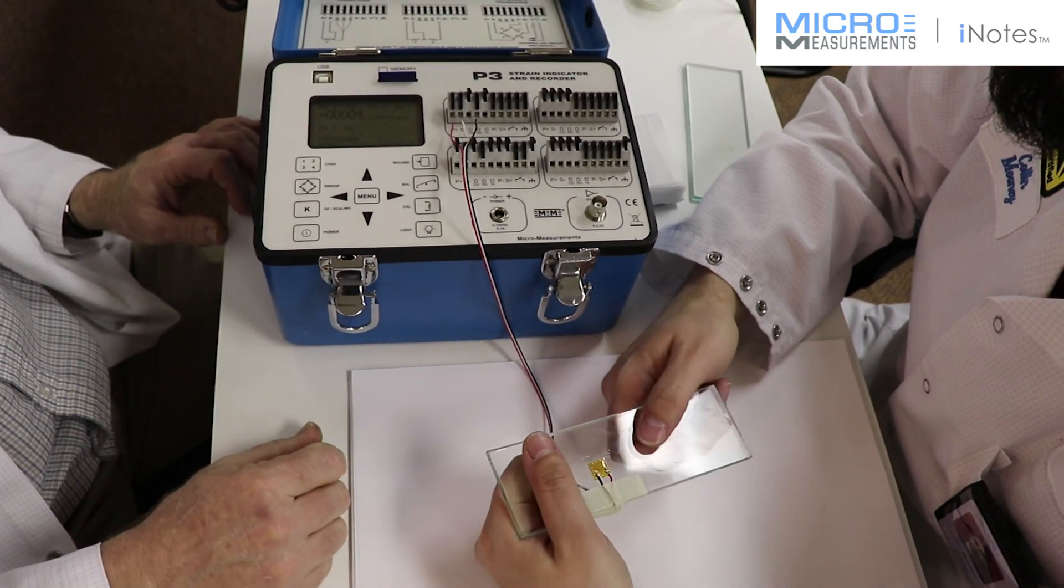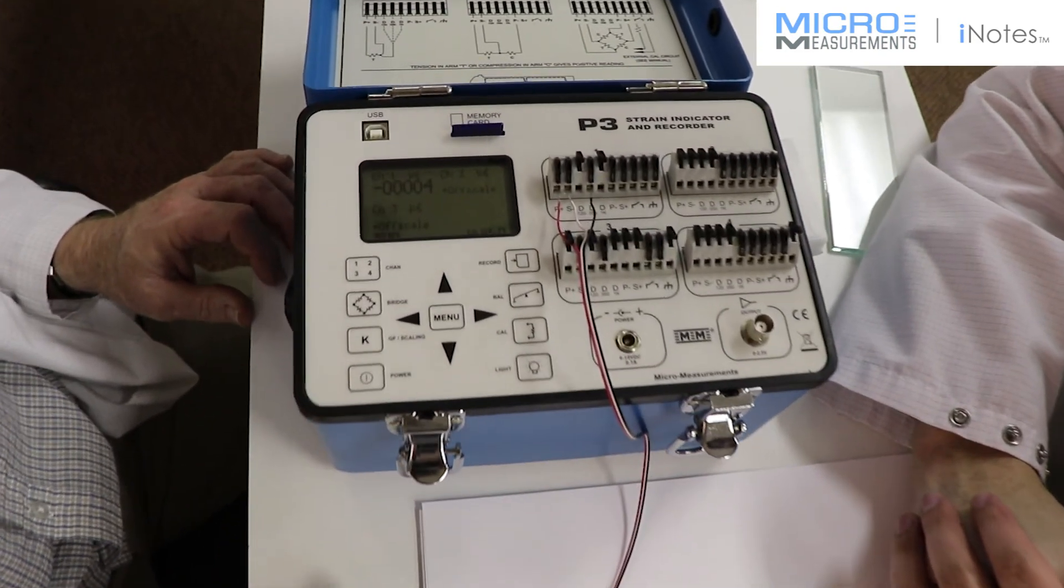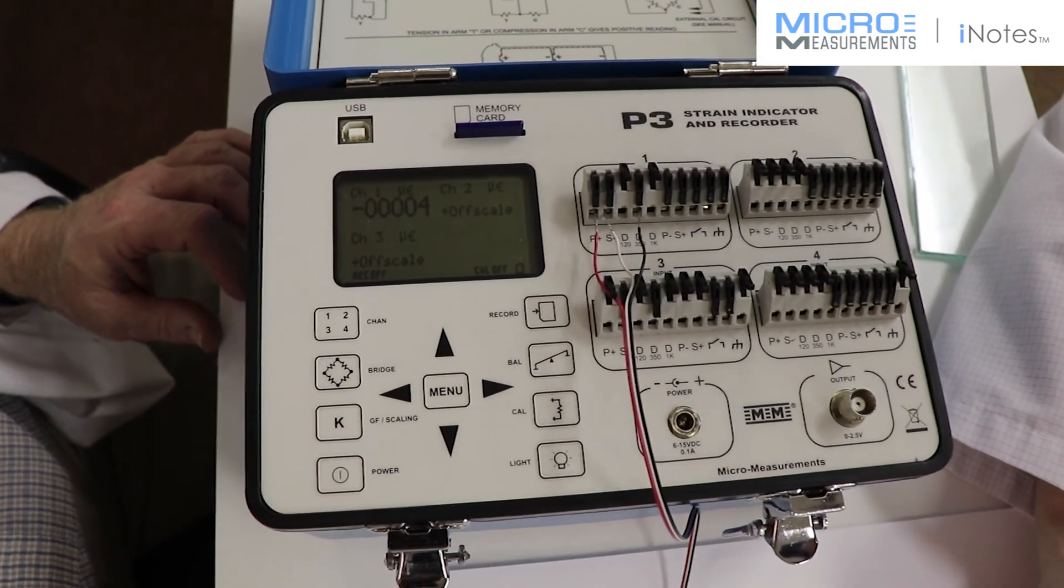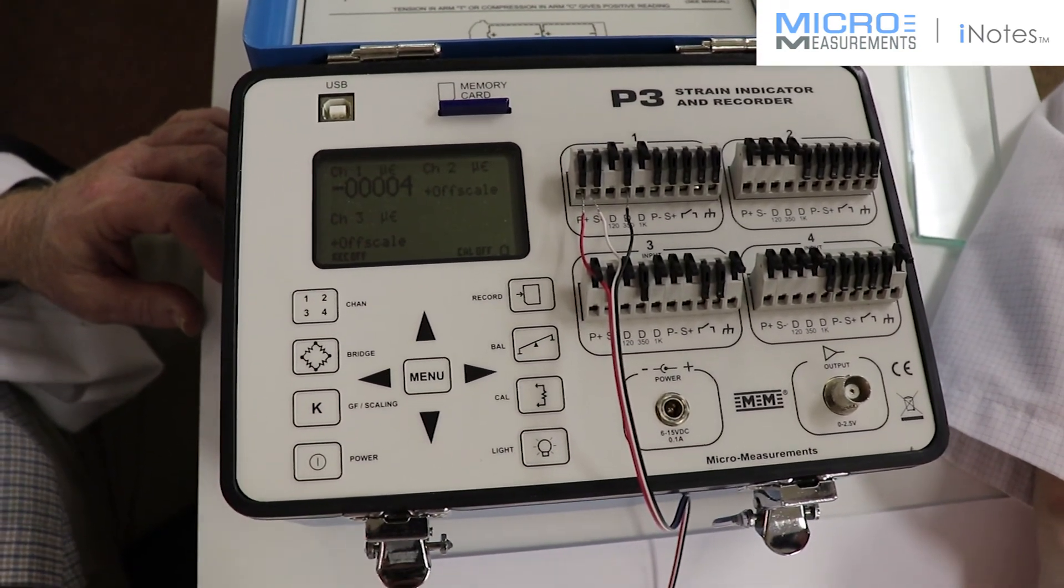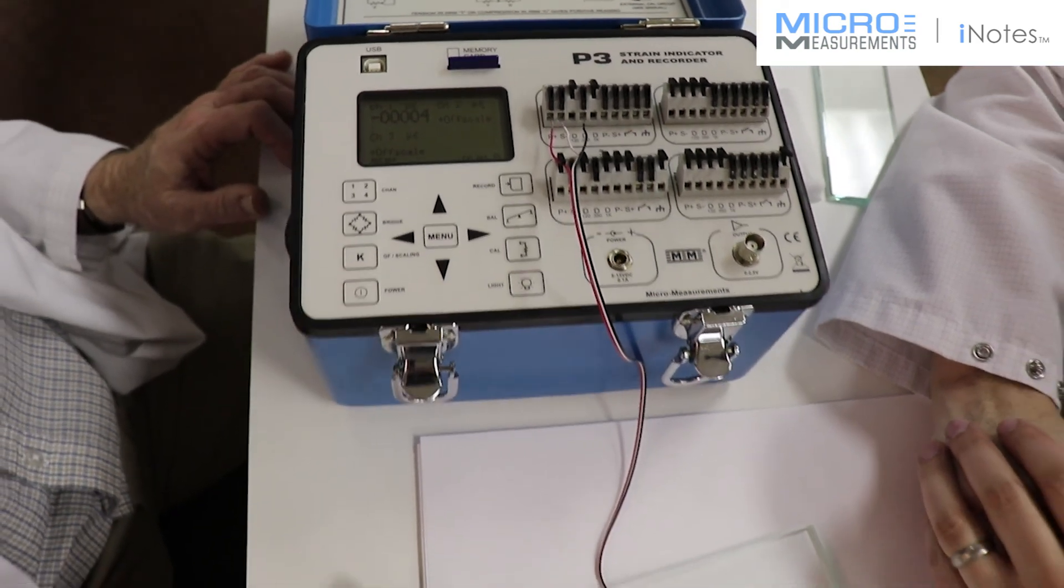He's kind of manipulating it back and forth. Just lay it down on the table there, just a second. And we've got about a four-count offset, but that's probably due to the fact that we've moved the wire and it's in a different location. But it looks like the gauge is working, and so we can measure our strain on our piece of glass.